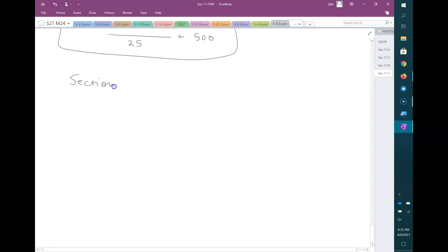Section 11.7, number 57. You're given a function c of x, that's 600 plus the square root of 200 plus 25x squared minus x.